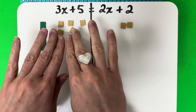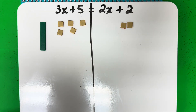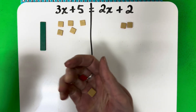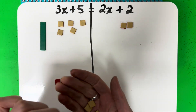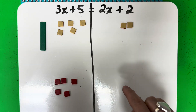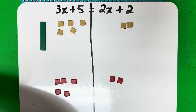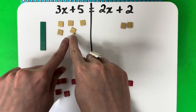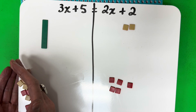Now these squares need to be moved to the right side. To do that, I'm going to put the opposite. I have positive 5, so I'm going to put negative 5 on both sides. So if I put negative 5 here, I need to put negative 5 on the other side. These cancel out — positive 5 minus 5 is zero, that's all gone, which is exactly what I wanted.